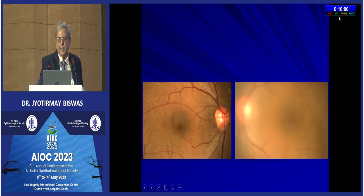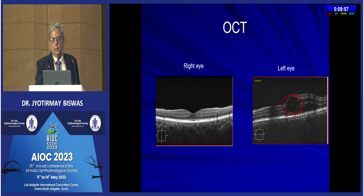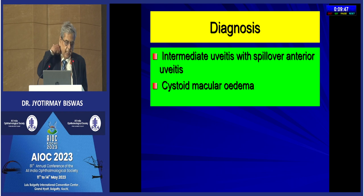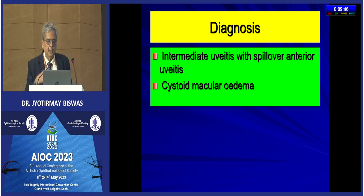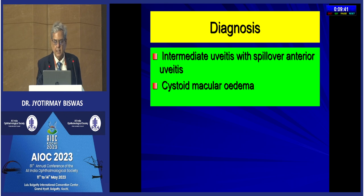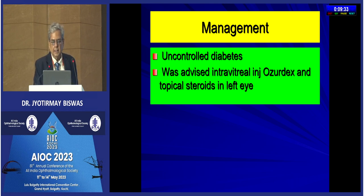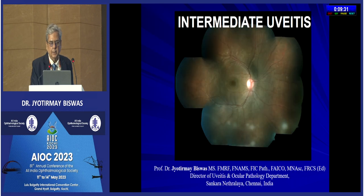We did an OCT which showed cystoid macular edema, neurosensory retinal detachment fluid underneath. We made a diagnosis of intermediate uveitis with spillover anterior uveitis and cystoid macular edema. He had uncontrolled diabetes. We gave him an intravitreal Ozurdex injection and topical steroids in the left eye.